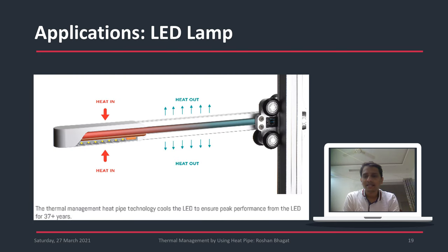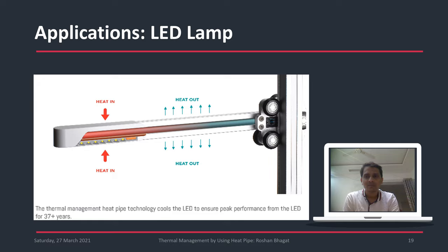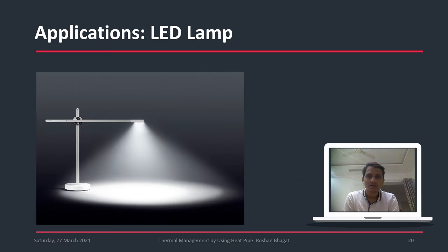LED lamps also generate too much heat. This heat can be removed using pulsating heat pipe technology by providing the heat pipe at the back side of the LED lamp, transferring heat to another section. Maintaining the temperature of LED lamps ensures a longer lifespan. Cooling the LEDs or any electronic equipment ensures the longer life of the electronic devices.